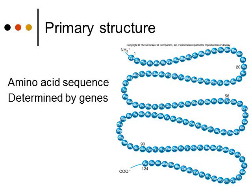This is an example of a primary structure. Basically, primary structure is just how the amino acids are laid out in a line — your amino acid sequence. This sequence is determined by the genes that we have in our DNA, so this is part of gene expression, one function of proteins.